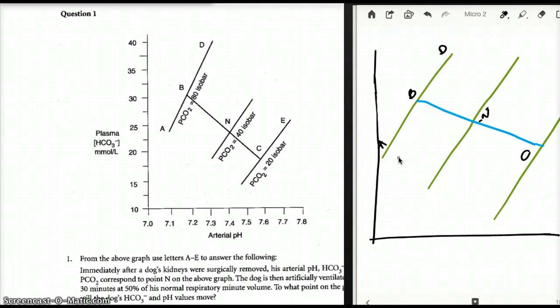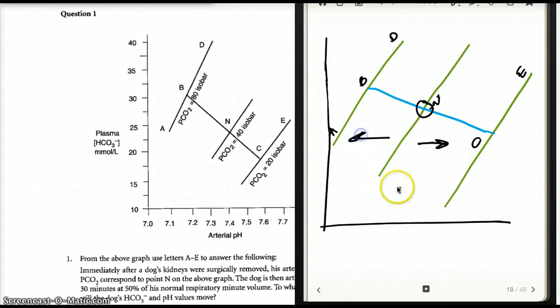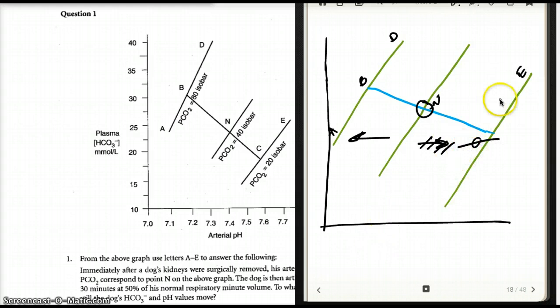The dog is going to be more and more acidotic because there is going to be more accumulation of carbon dioxide. Just by that fact, I can rule some answers out. In this direction we have pH being increased; in this direction we have pH being decreased. So we're going to rule out choices where pH increases, because the pH is going to decrease due to the 50% decrease in normal respiratory minute volume. Choice C is out and choice E is out.